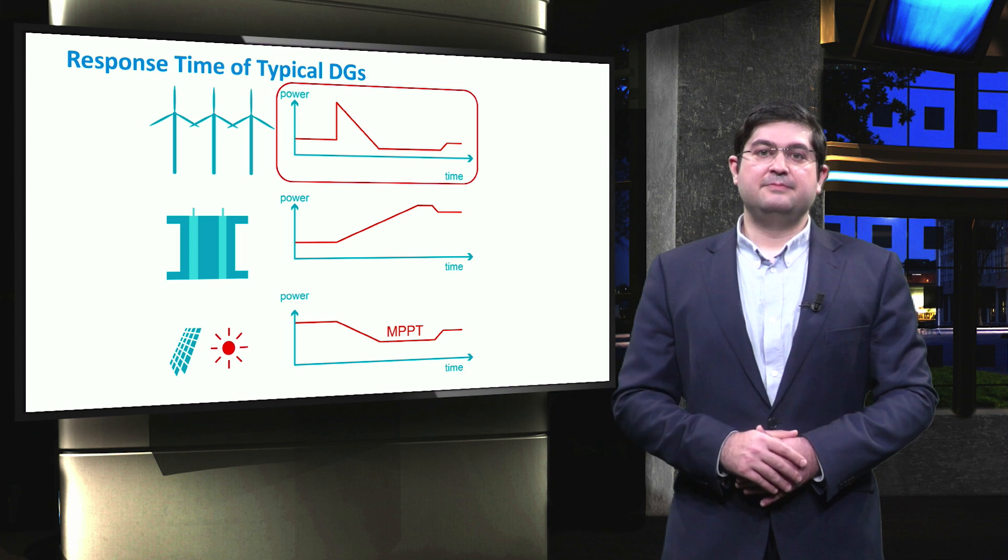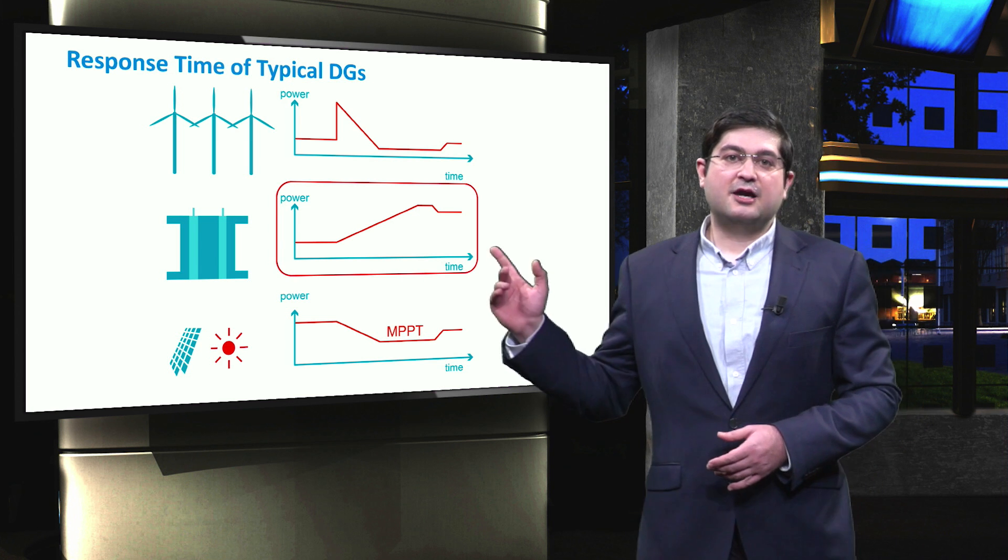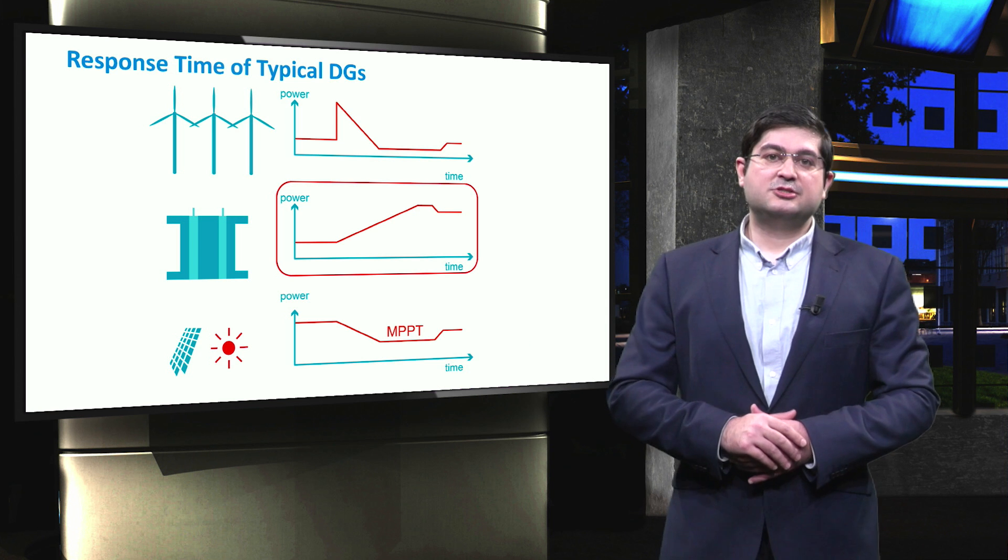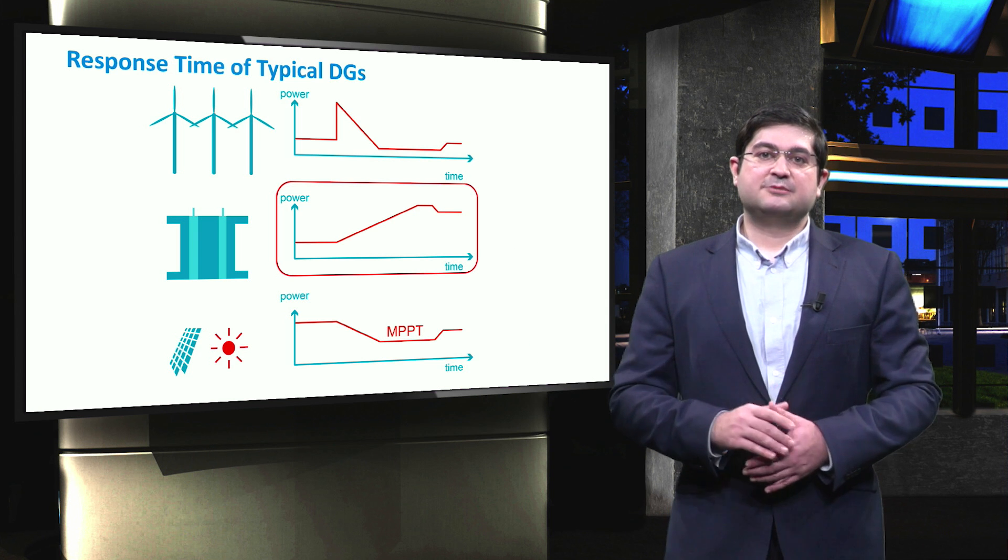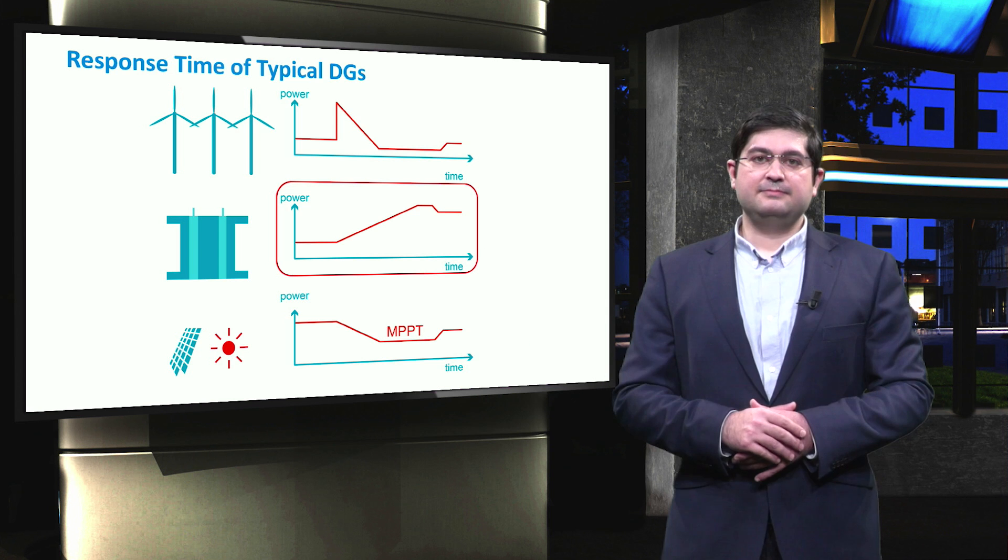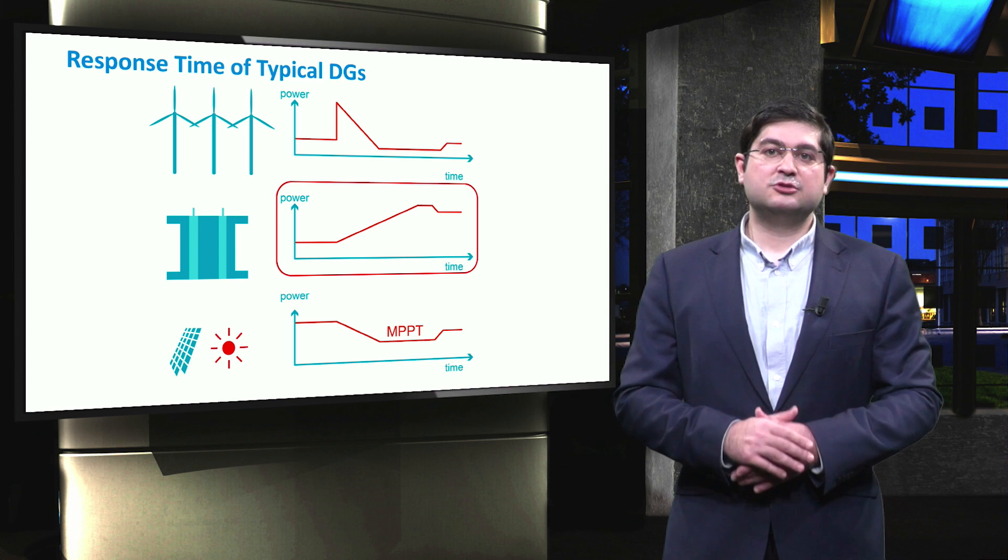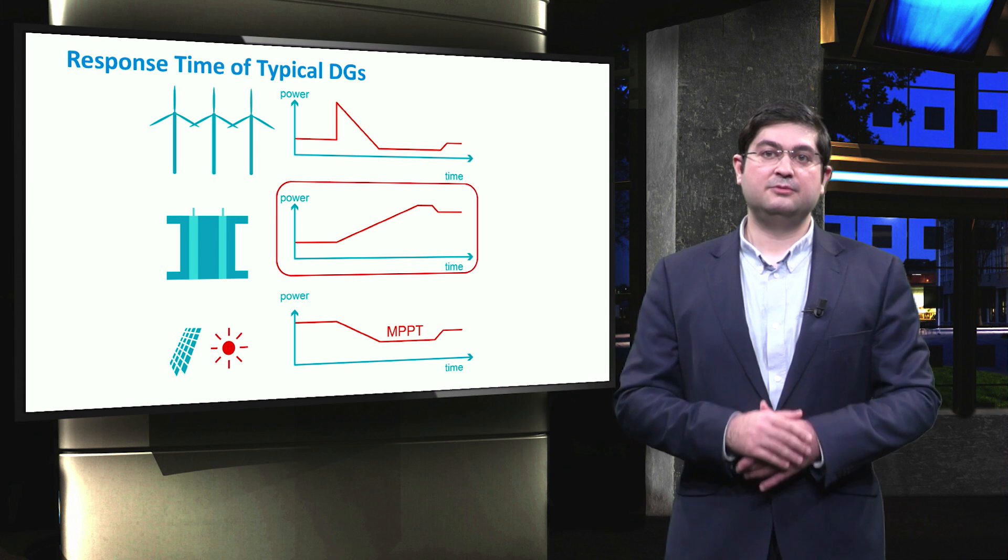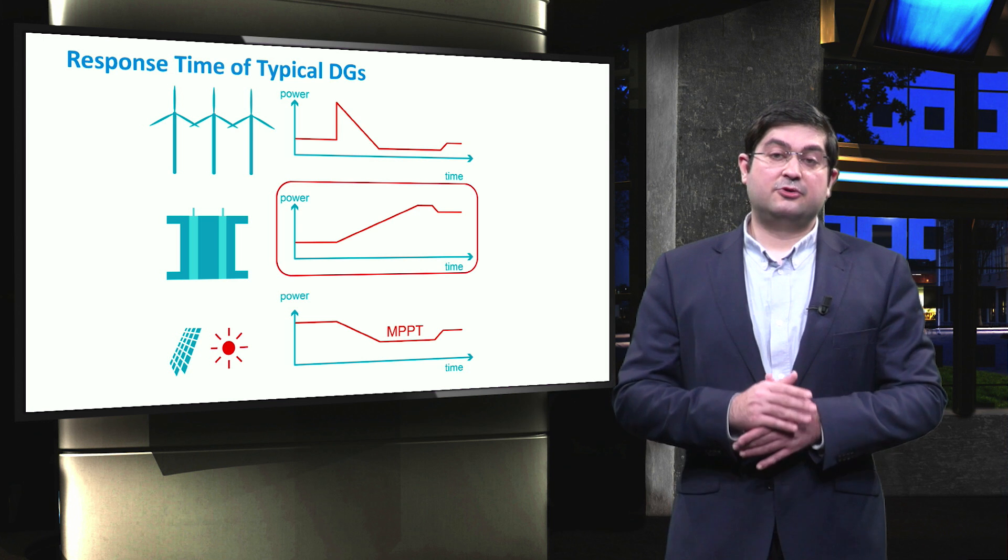On the other side, fuel cells are typically represented by a large time constant, due to which their response is very slow. Therefore, they are not suitable for primary frequency control and are mainly used for secondary control.